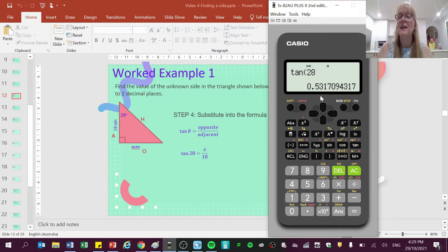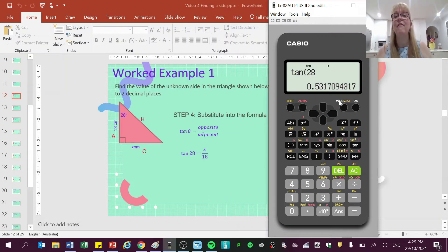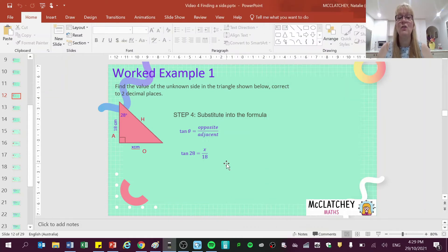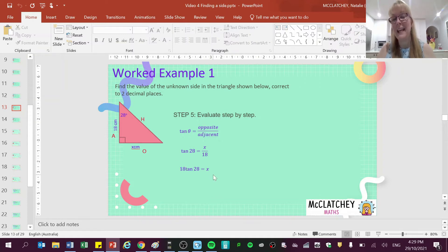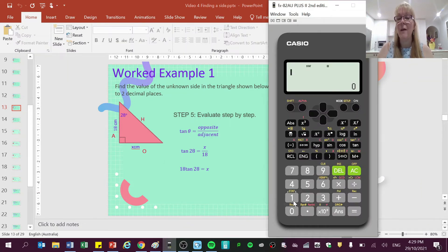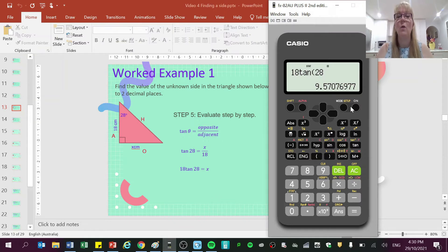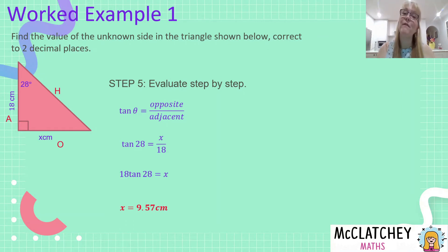Any time you see sine, cos, or tan with a number after it, it represents a value for that angle. Now we rearrange the formula to get x by itself — we multiply both sides by 18. Type into your calculator: 18, then the tan button, then 28, and press equals. We get 9.5707... Rounded to two decimal places, x equals 9.57 centimeters.